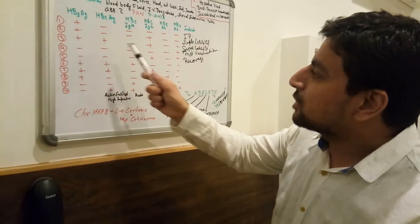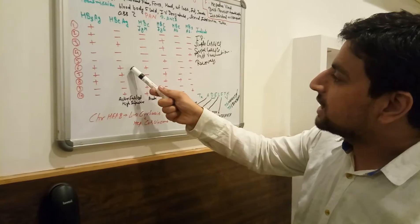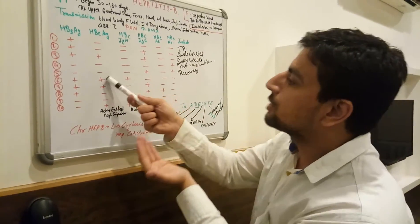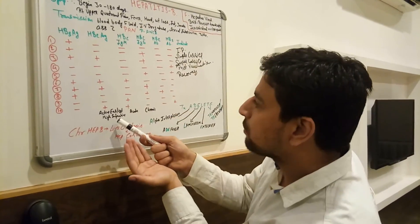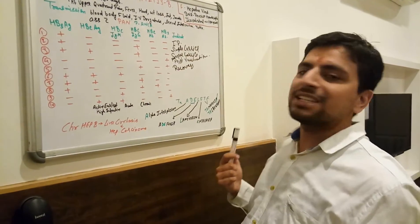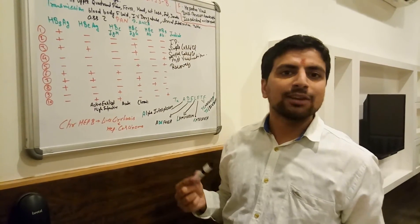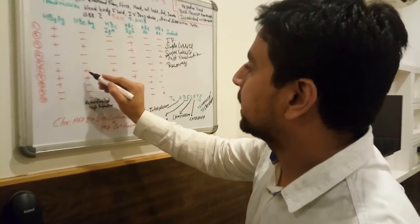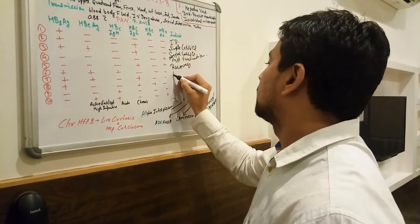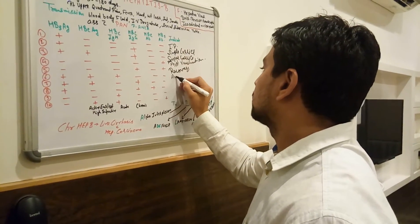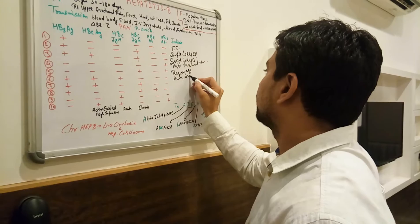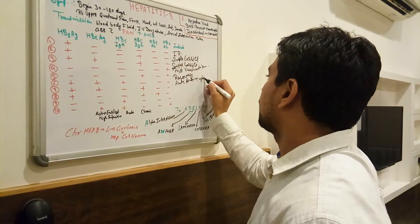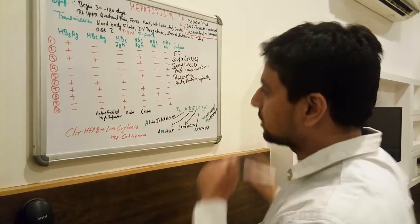If Hepatitis B surface antigen is positive, e-antigen is positive, and IgM is positive — IgM shows acute infection. This indicates acute active Hepatitis B virus infection.